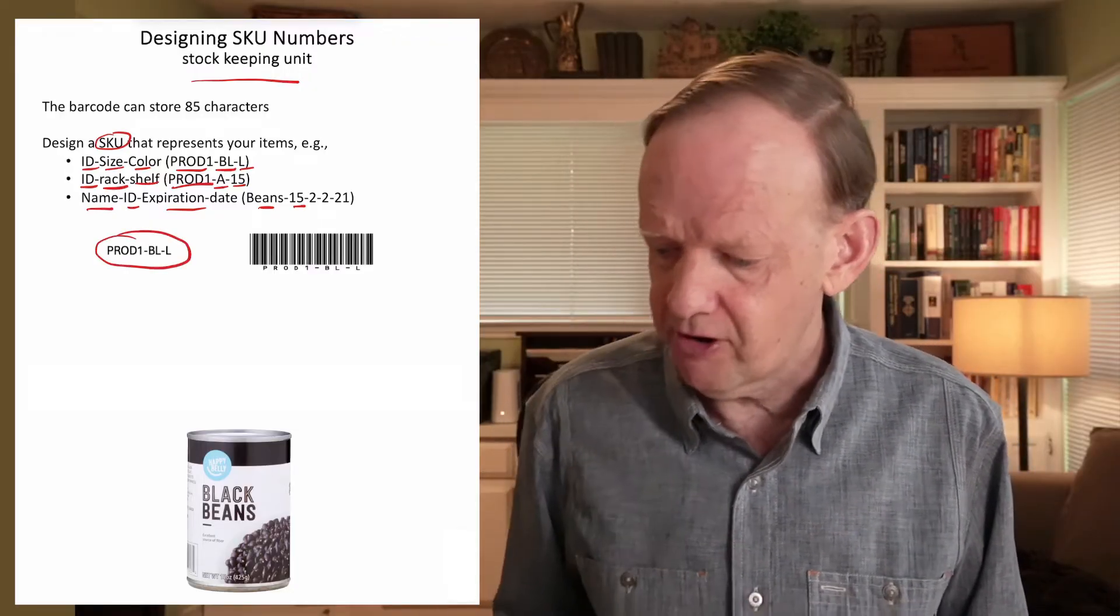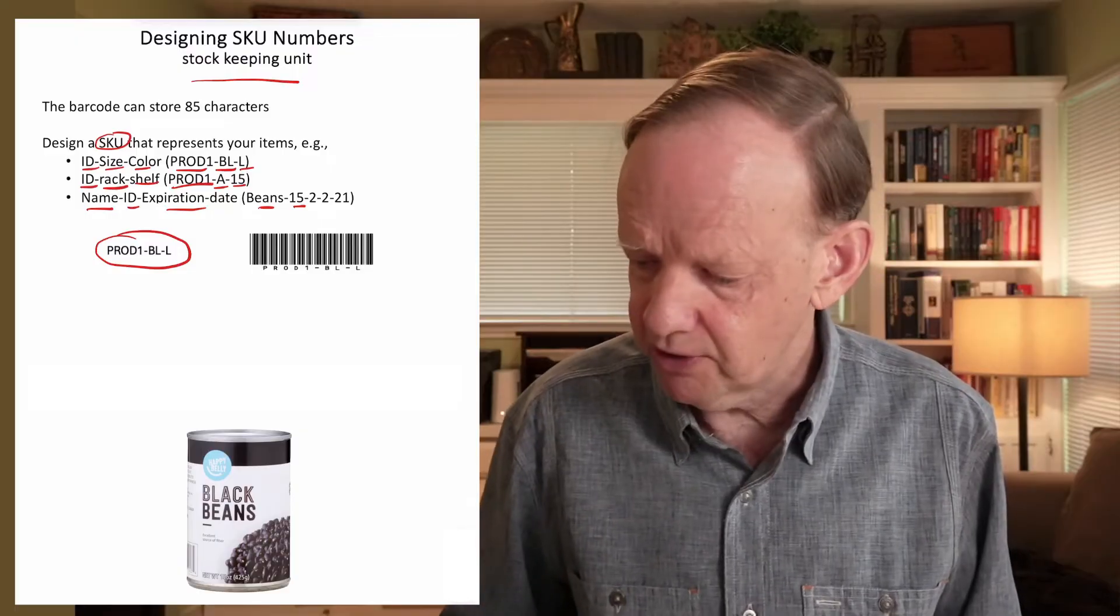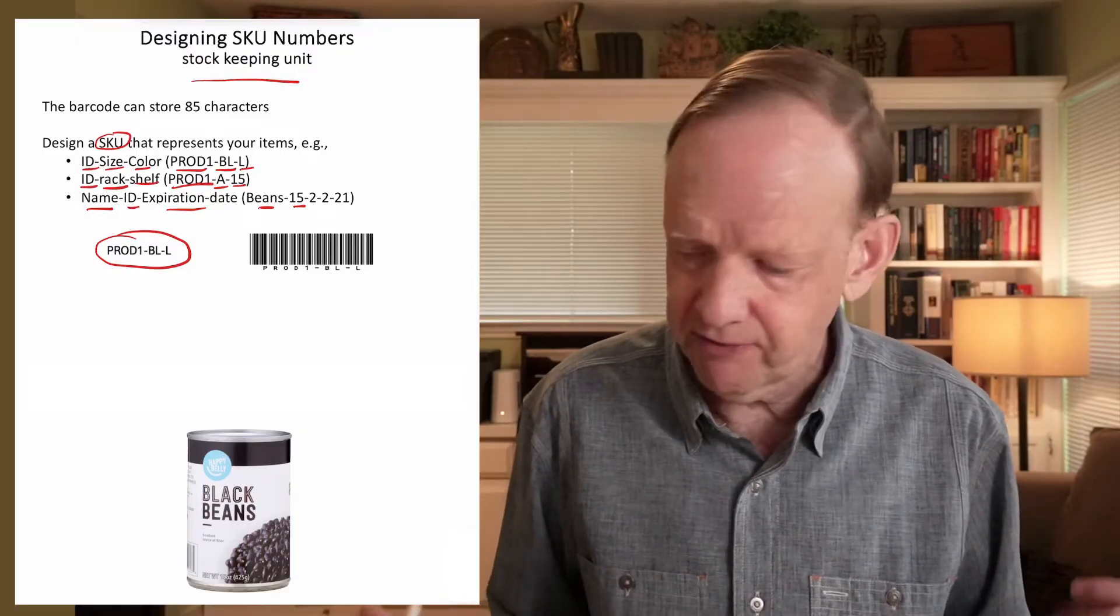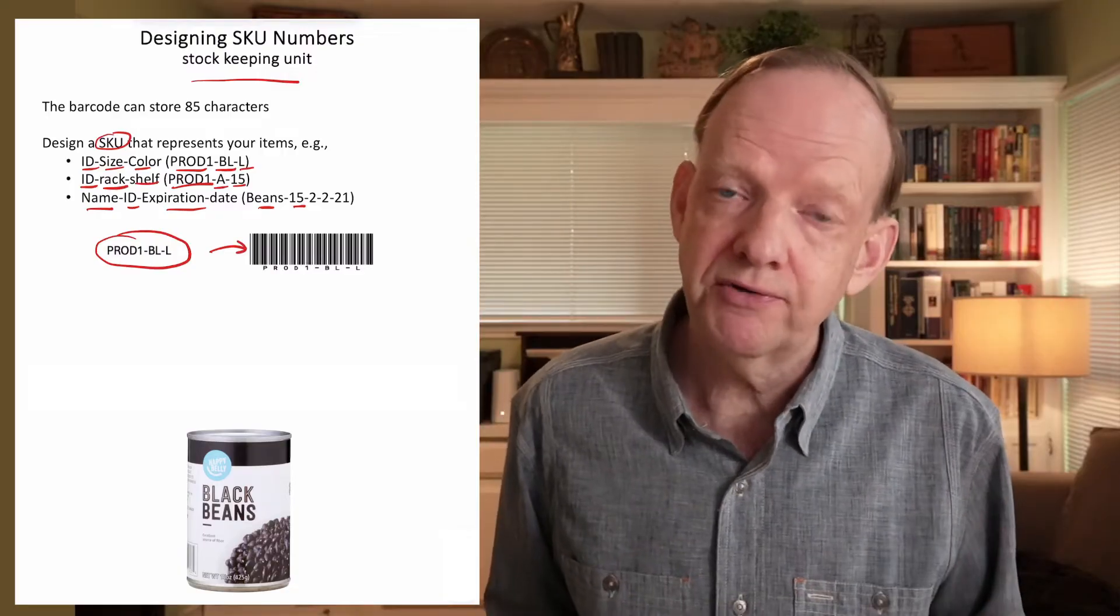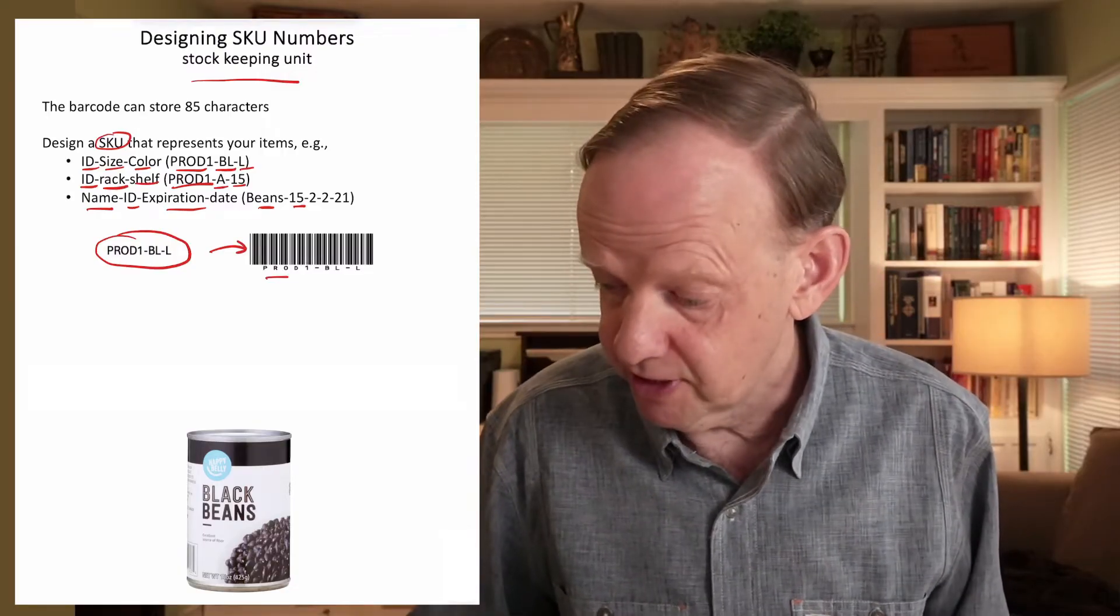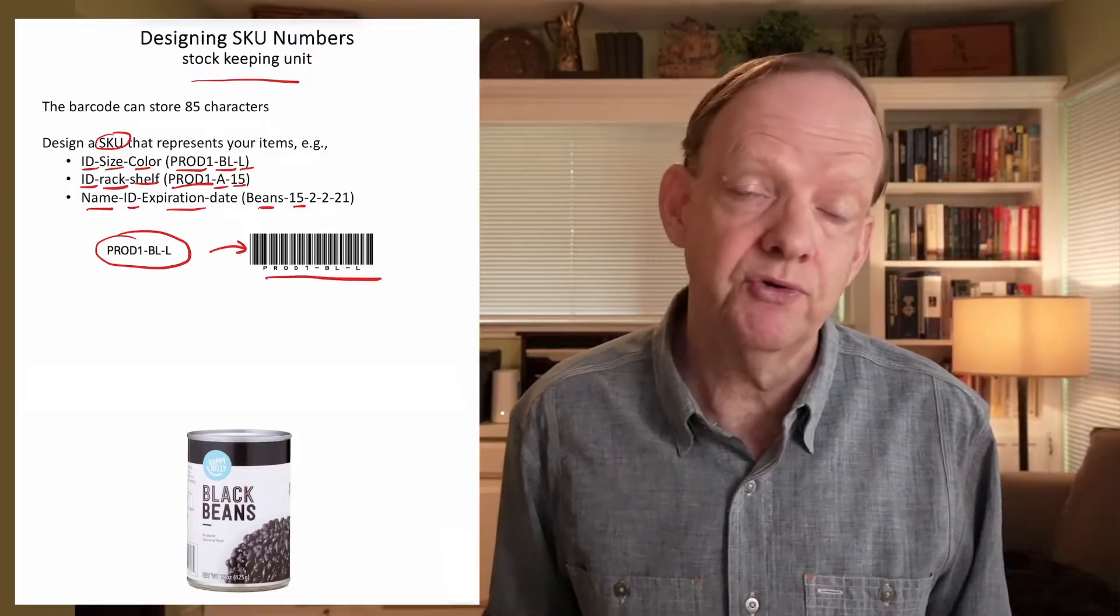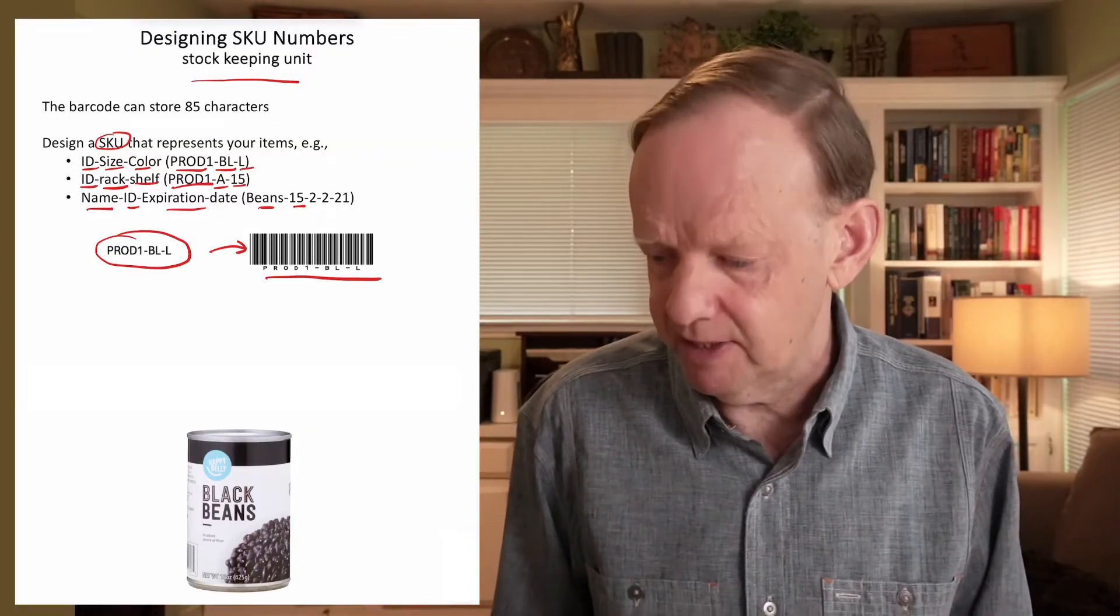So if we took that example there and end up with a prod one, blue and large, that's our SKU identifier. We can actually generate a barcode. And the barcode format I've picked actually gives you the SKU letters below the barcode.